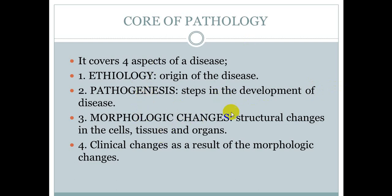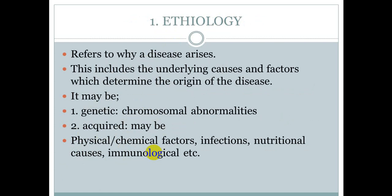Third aspect is morphological changes — structural changes in cells, tissues and organs. Etiology ho gayi, ek cause ho gaya, phir disease ki steps hogi, phir as a result of disease cells mein, tissues mein, organs mein structural changes honge — that is known as morphological changes. The fourth is clinical changes. As a result of morphological changes, jo clinical manifestations ho jaati hain — that is known as clinical changes. So yeh chaar aspects hain har disease ke, in the core of pathology: etiology, pathogenesis, morphological changes, and clinical changes.